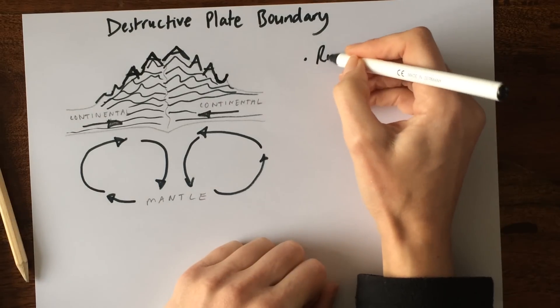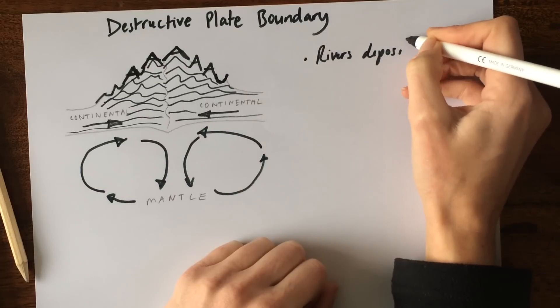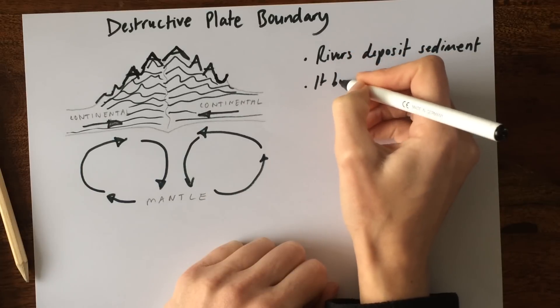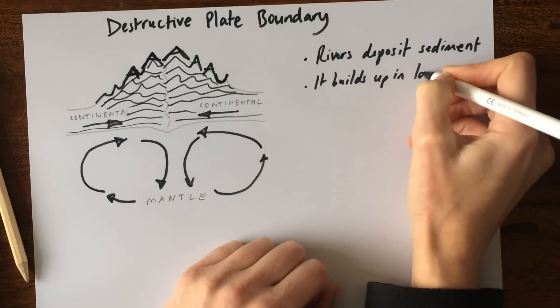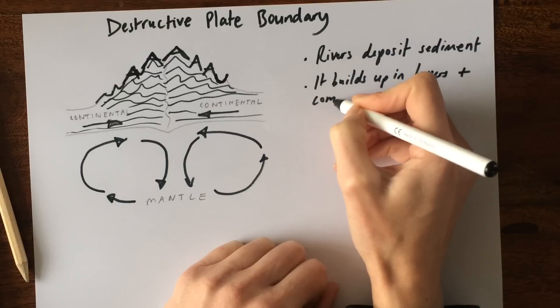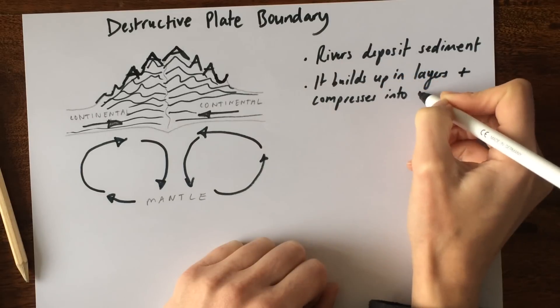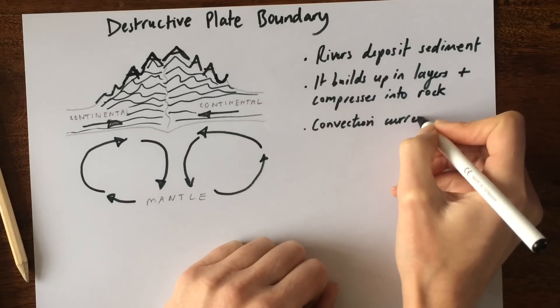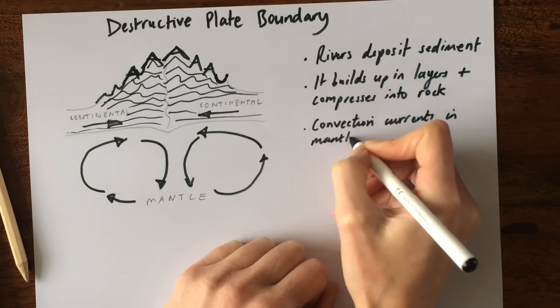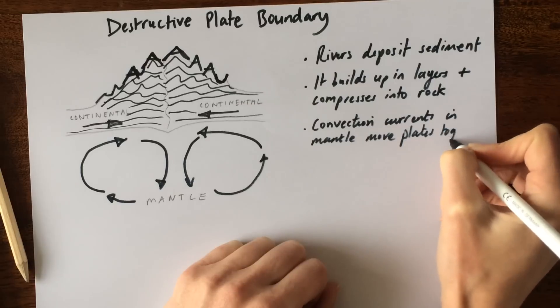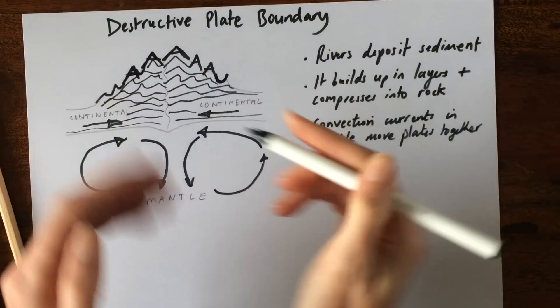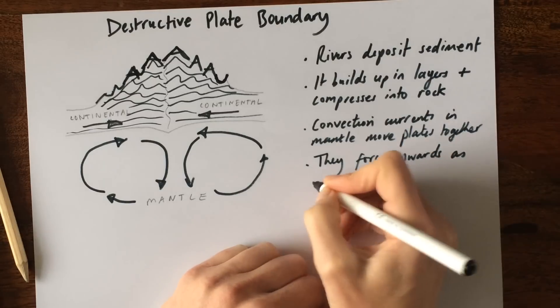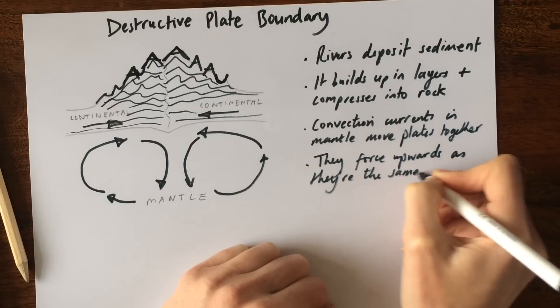Firstly, rivers deposit sediment. It builds up in layers and compresses into rock. Convection currents in the mantle move the plates together. They force upwards as they're the same density, and that creates fold mountains.